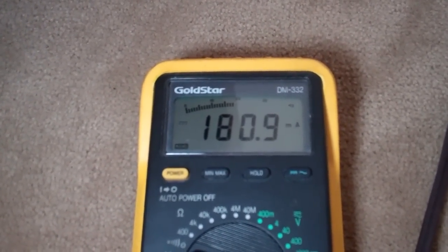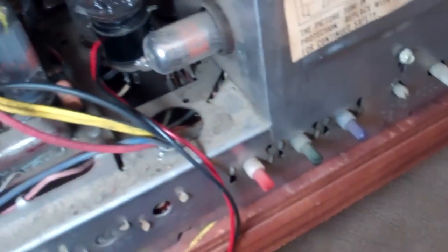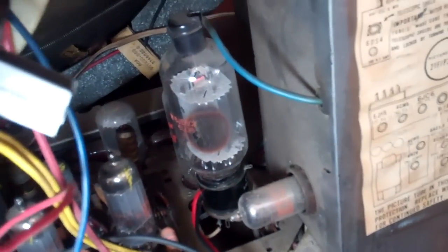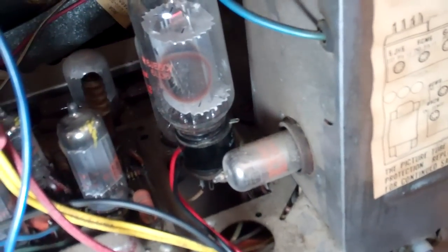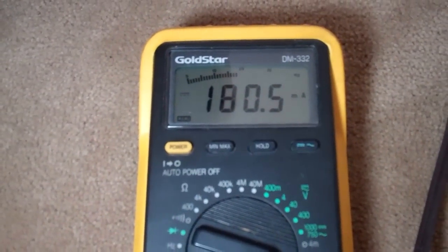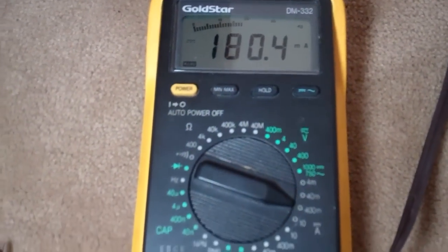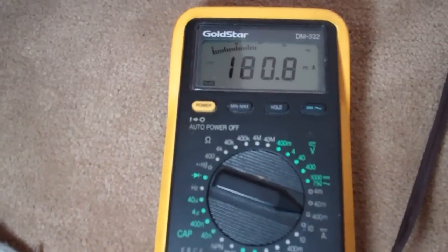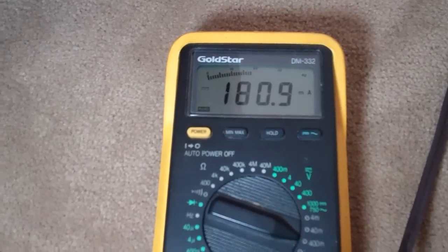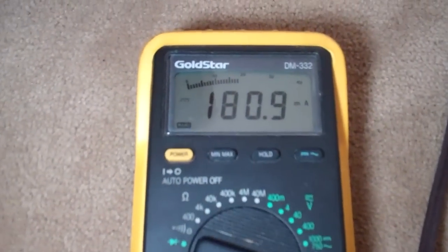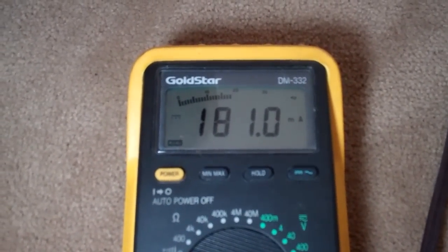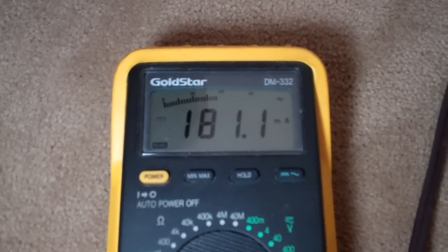So we're only at 180 milliamps. Now on this type of set that uses a 6GE6, recommended is about 220 milliamps. Anything over that, you're really overheating the flyback. So I'm going to let this run for about 10 minutes and we'll come back.